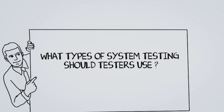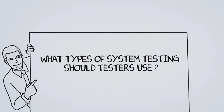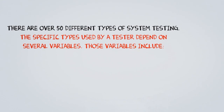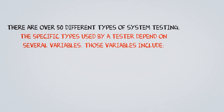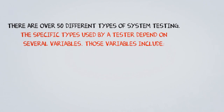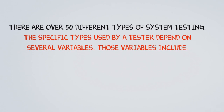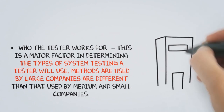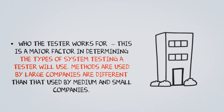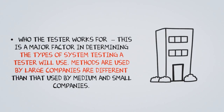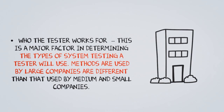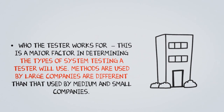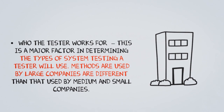What types of system testing should testers use? There are over 50 different types of system testing. The specific types used by a tester depend on several variables. Those variables include who the tester works for — a major factor in determining the types of system testing a tester will use. Methods used by large companies are different than those used by medium and small companies.